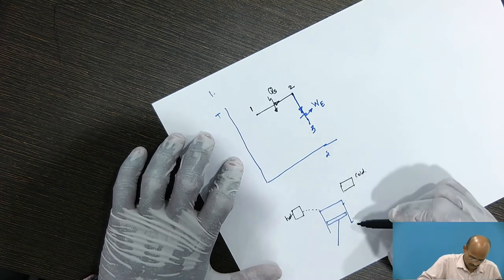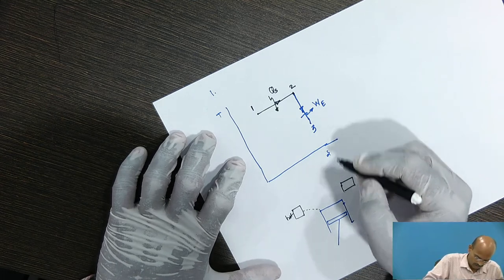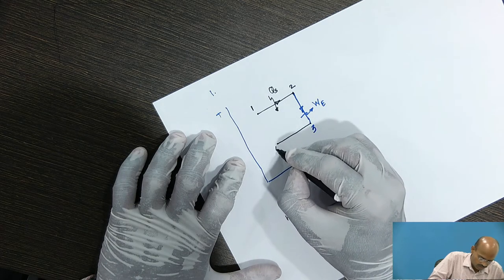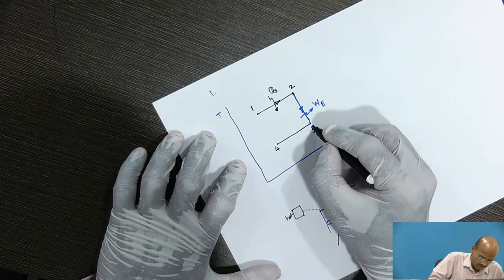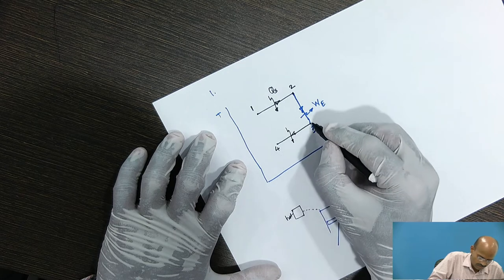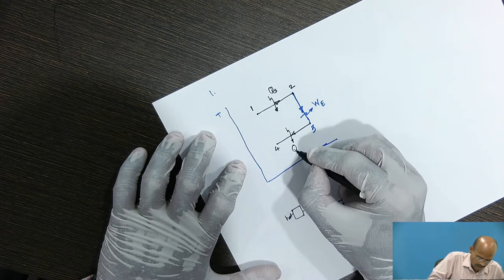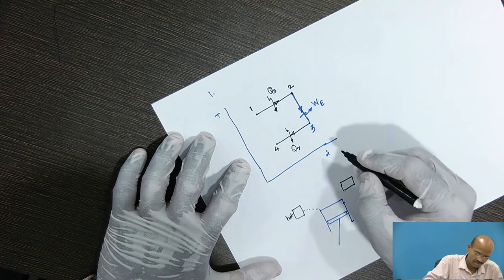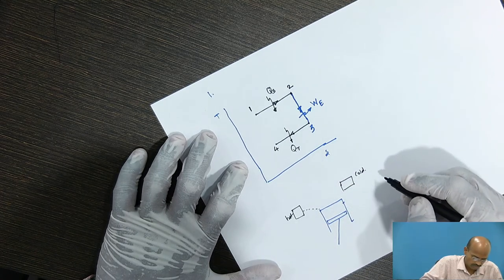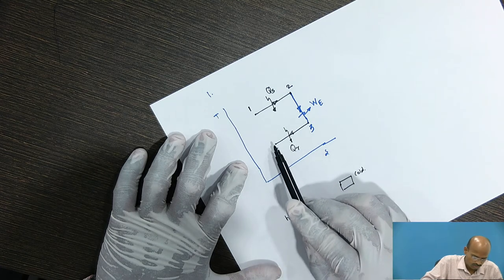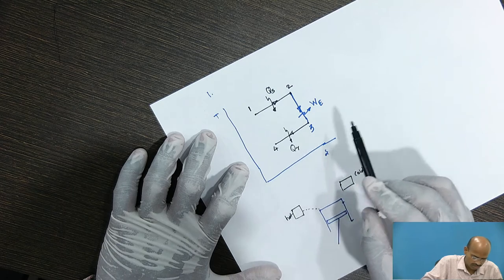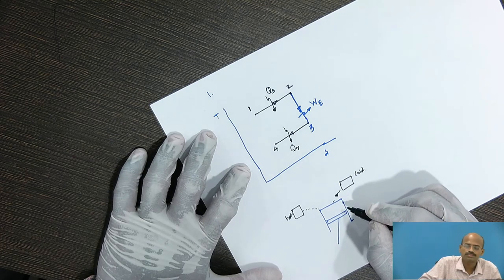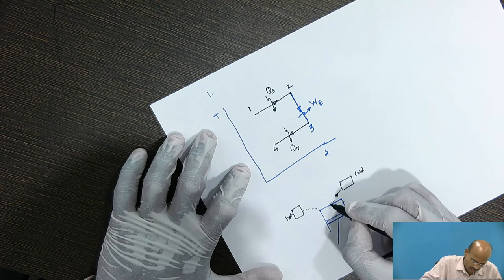After reaching the bottom dead center, the system starts rejecting the heat and once again, it will follow the isothermal heat rejection. During process 3 to 4, the heat rejection will continue from state 3 to state 4 and there would not be any decrease in the temperature as this is the theoretical process. Now, the heat rejection will be from this system to the cold body. We need to bring this cold body in contact with the cylinder head.